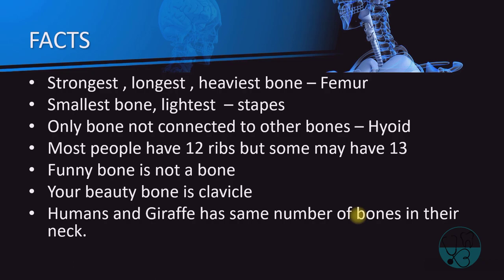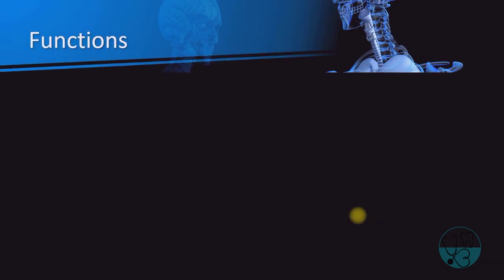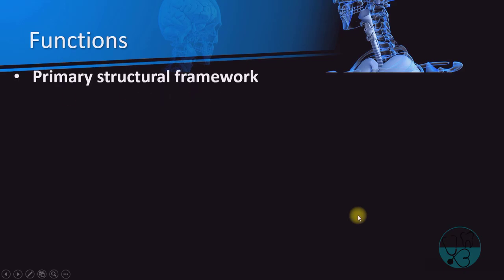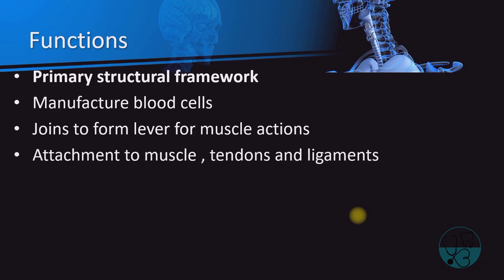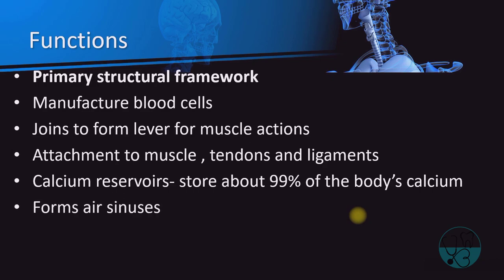The major function of bone is to provide the primary structural framework to the body, giving shape and support to internal organs. The bone contains a central marrow cavity, which houses bone marrow — a major hematopoietic organ. Bone also provides attachment to muscles, tendons, and ligaments, and serves as levers for muscles, multiplying their force to attain movement. Air sinuses are hollow spaces in the head that make it lighter and aid in resonance of voice, while ossicles help in amplification of sound in the middle ear.